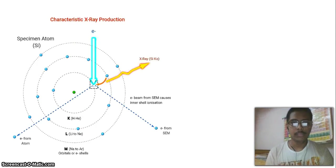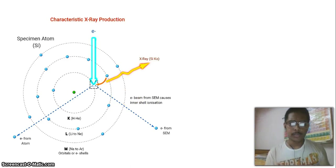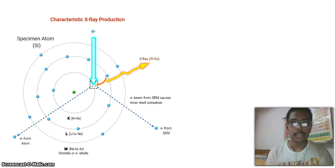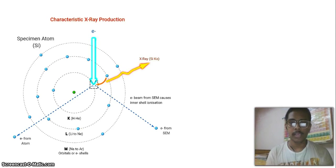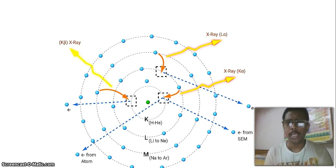Now going into more detail about characteristic X-ray generation: as shown by the sky-colored arrow, the electron beam comes in and ionizes an inner orbital electron. A higher energy electron, shown in deep yellow, comes to fill that gap, causing X-ray generation shown in light yellow. By this mechanism, you can have the generation of K-alpha, K-beta, or L-alpha X-rays. The nomenclature is quite straightforward.